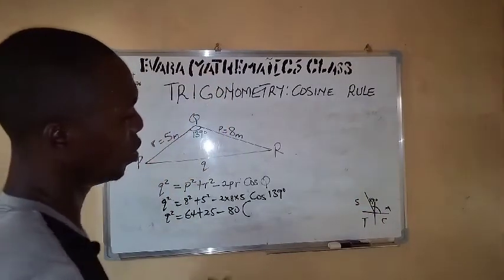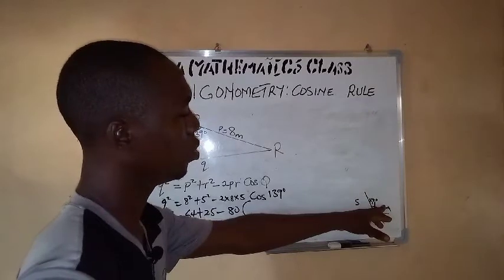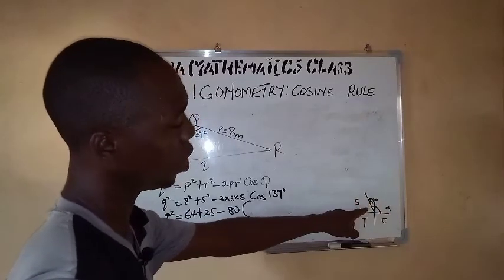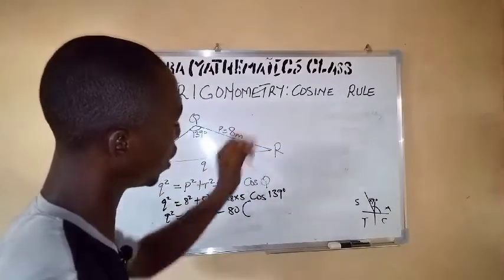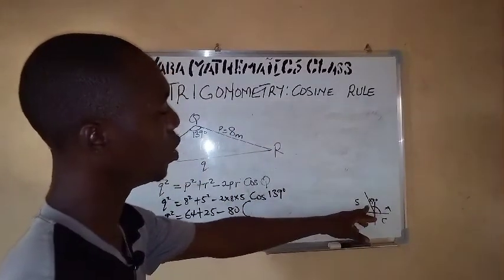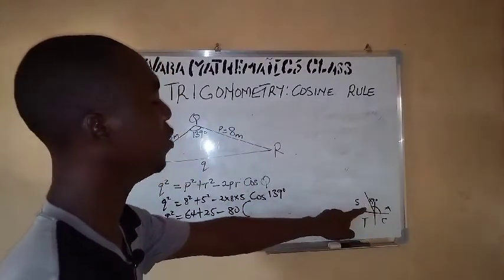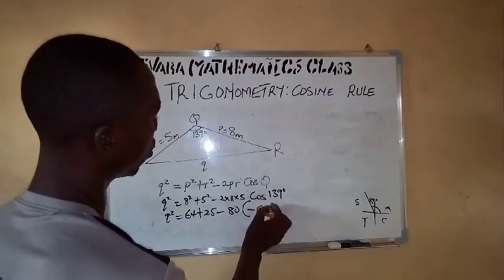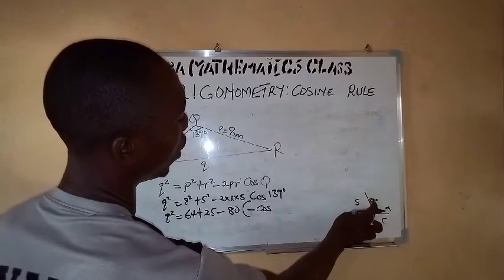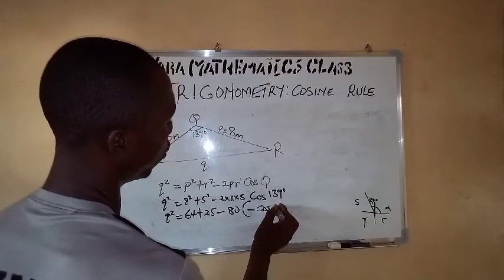This is CAST. Remember, here all ratios are positive. Here only sine is positive. Now we are dealing with cosine and it has fallen in the region of sine, so that means it is going to be negative. So it will now be